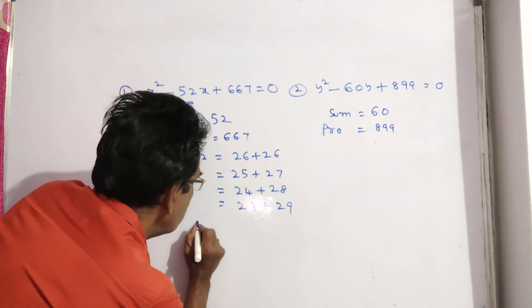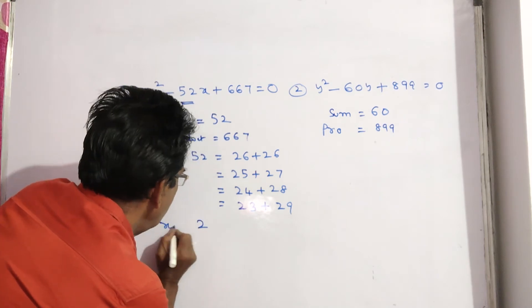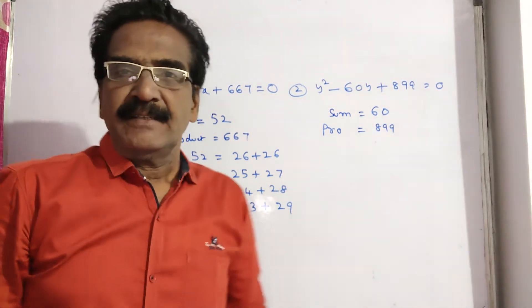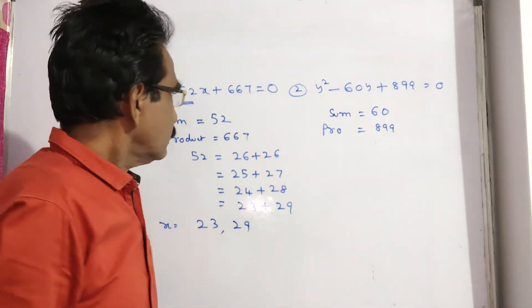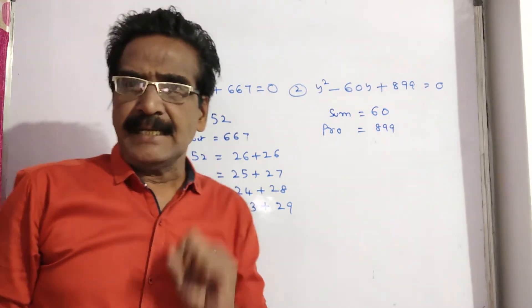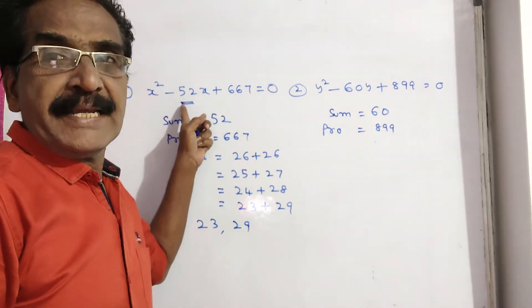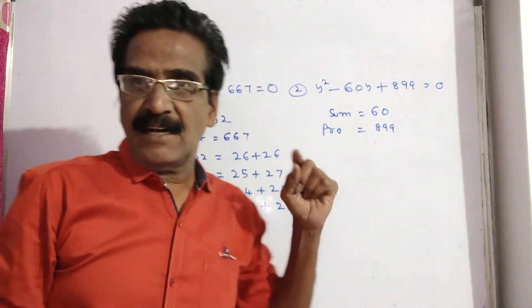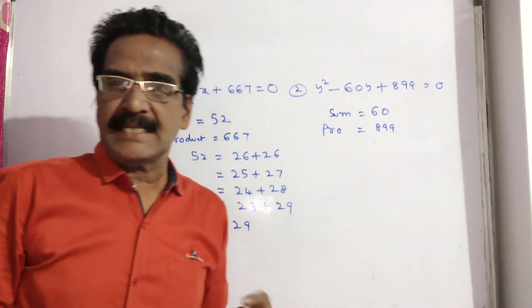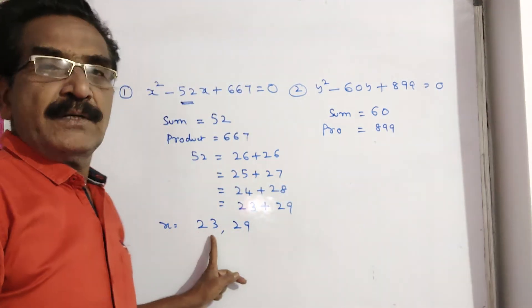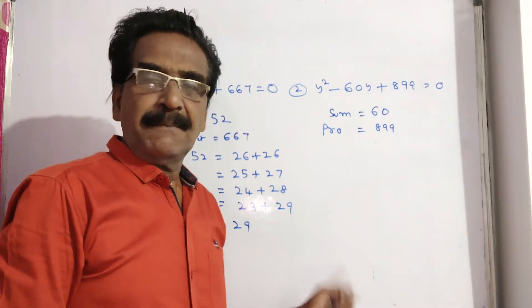23 plus 29, 23 into 29, see, 667. So our roots are, x values are 23 and 29. Here, coming to the sign of the roots, b is minus, a and c are plus. If b is minus and a and c are plus, both the roots are positive. So x is equal to plus 23, plus 29.